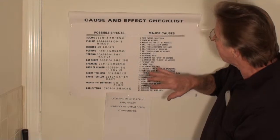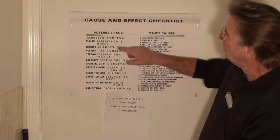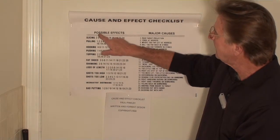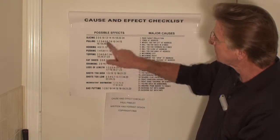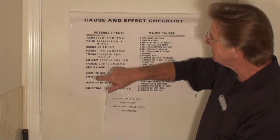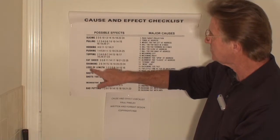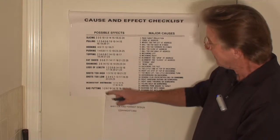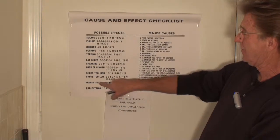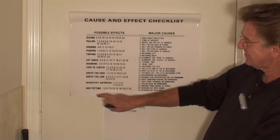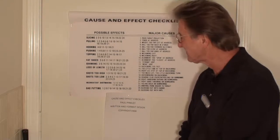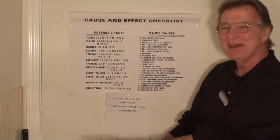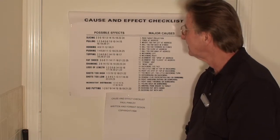And how they would impact the effects or the results — such as slicing, pulling, hooking, pushing, topping, shanking, loss of length, shots too high, shots too low, inconsistent shot making, and bad putting. So now we have the cause and effect checklist.